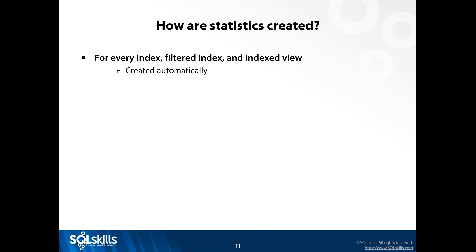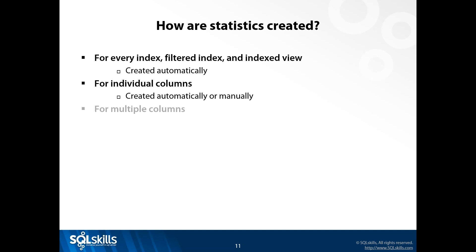It's important to understand how these statistics get created so you know when to expect them. They get created automatically every time you create an index, a filtered index, or an indexed view. SQL Server manages the statistics for those objects in the background. They also get created for individual columns - either automatically or manually. Manually means you issue a CREATE STATISTICS command. It happens automatically when you query or join on a column that is not a leading column in an index.